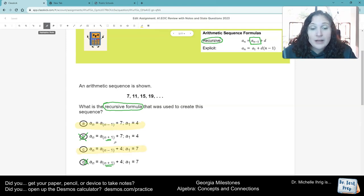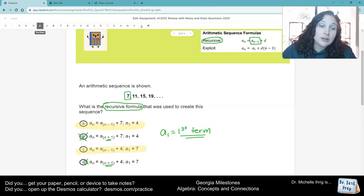So now we're going to kind of plug in the numbers. Remember that I told you that A sub 1 is always the first term. So if we look here, our first term is 7. So that's why it has to be letter C.